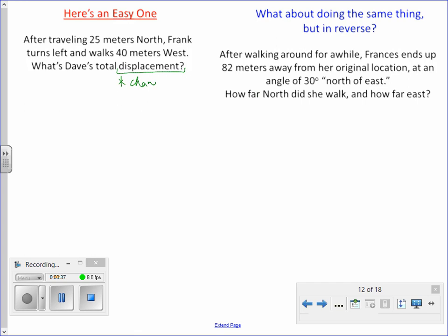To go back and review what we've been doing, we've talked about a problem like this. After traveling 25 meters north, Frank turns left and walks 40 meters west. What's Dave's total displacement? Two ways to talk about displacement. The formal definition is change in position. Functionally, what we're asking is how far and in what direction.